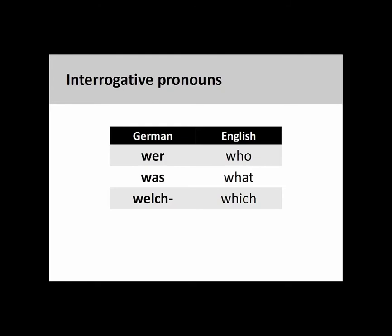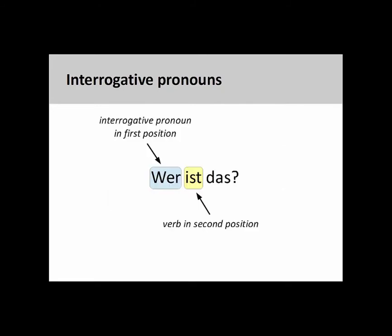'Wer' also has different accusative, dative, and genitive forms, which we will also examine later. In the sentence 'Wer ist das?' (Who is that?), the interrogative pronoun 'wer' inquires about the identity of a person. You will note that the interrogative pronoun is in the first position and the verb in the second position.